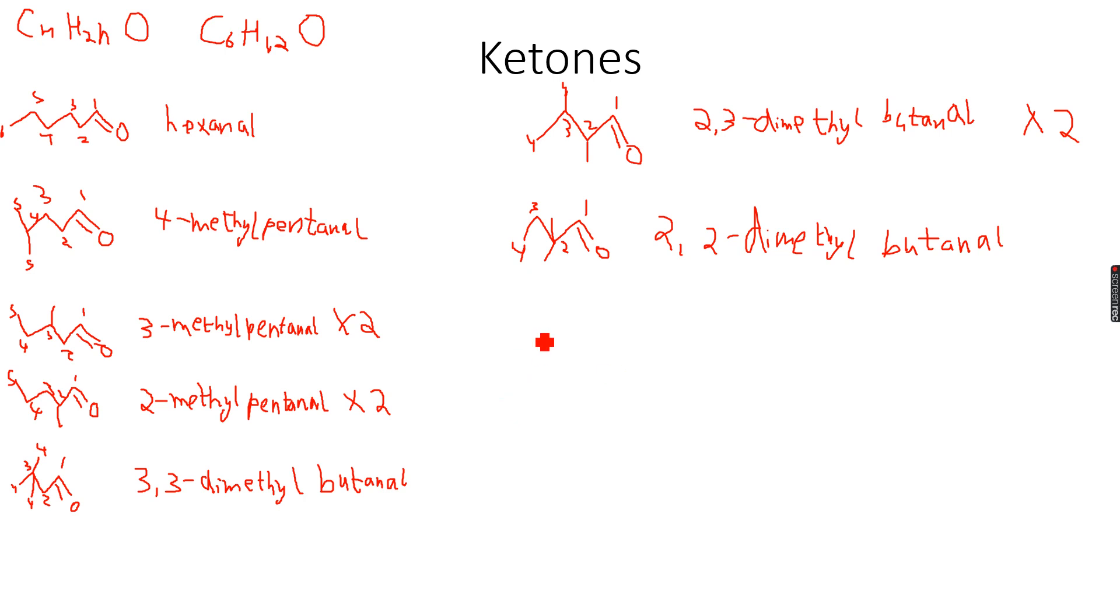Now can we have a three-carbon main chain? Let's see. No, we cannot have a three-carbon main chain because that is not looking so feasible. So where will I place my methyl groups? I can place two over here and then I have to place one again over here, so again this would not be feasible.